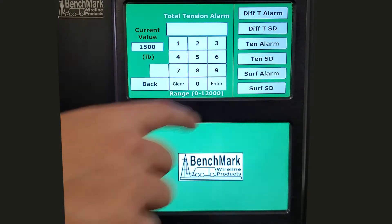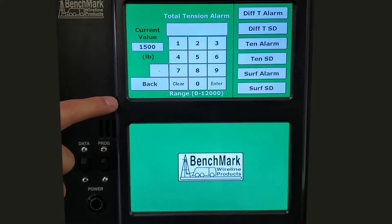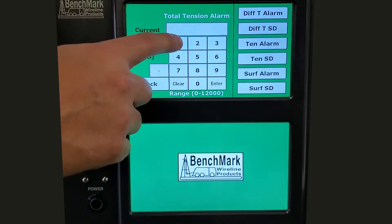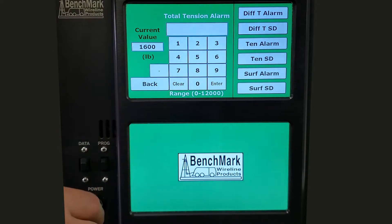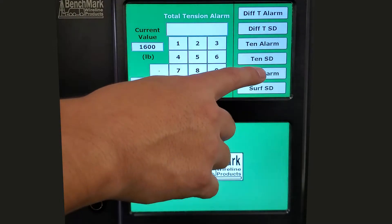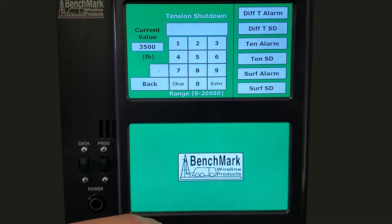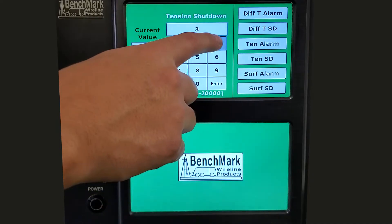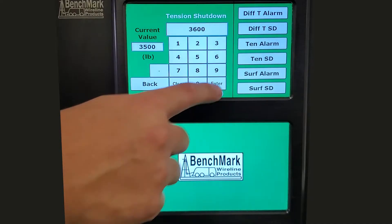Then press the total tension alarm, select the values, and press Enter. Then press the tension shutdown button, enter the tension shutdown value, and press Enter.